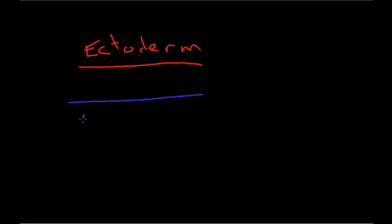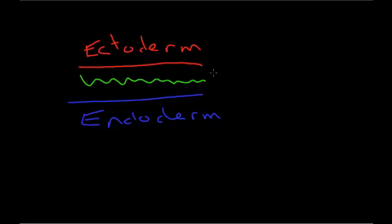An embryo is fundamentally three tissue layers at the very beginning. The upper layer being the ectoderm, the lower layer being the endoderm, and the middle layer being the mesoderm.